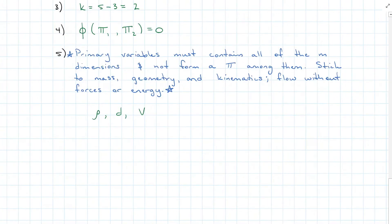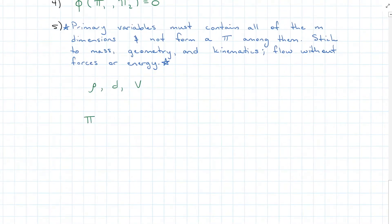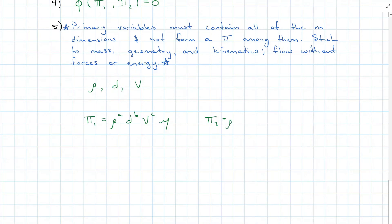Now we plug those into our pi equations. Pi one is going to be density, diameter, and velocity raised to the powers a1, b1, and c1 respectively, times mu — the variable we didn't use as primary. Pi two is again density, diameter, and velocity raised to powers a2, b2, c2, times the drag force — the other remaining variable.